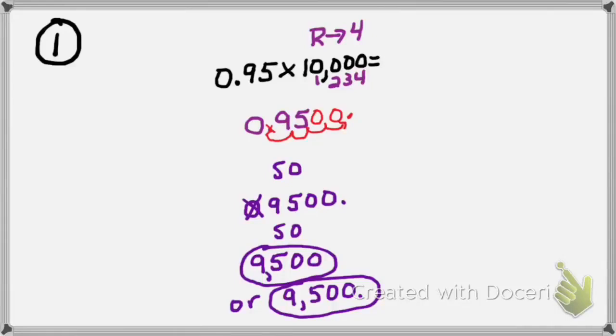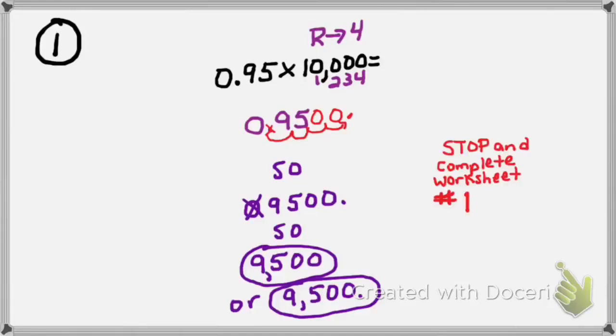The decimal at the end of a number, if there are no digits after it, is optional — that's your choice. Either way would be correct. Please stop the video and complete worksheet number 1 right now.